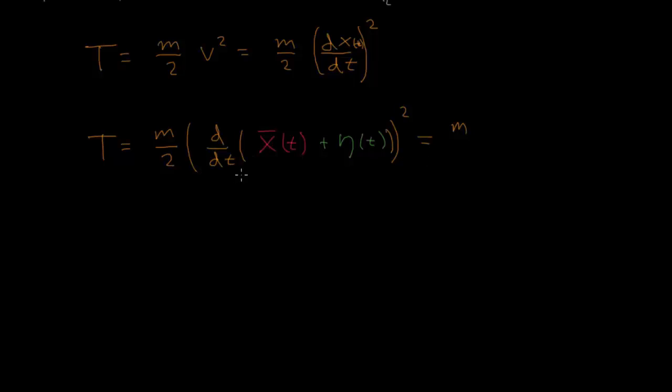A derivative of the sum is the same as the sum of the derivatives. So m over 2 times, I will write it in pink this time, x of t, so the time derivative of the true path x plus the time derivative of the difference function. All of that is squared.